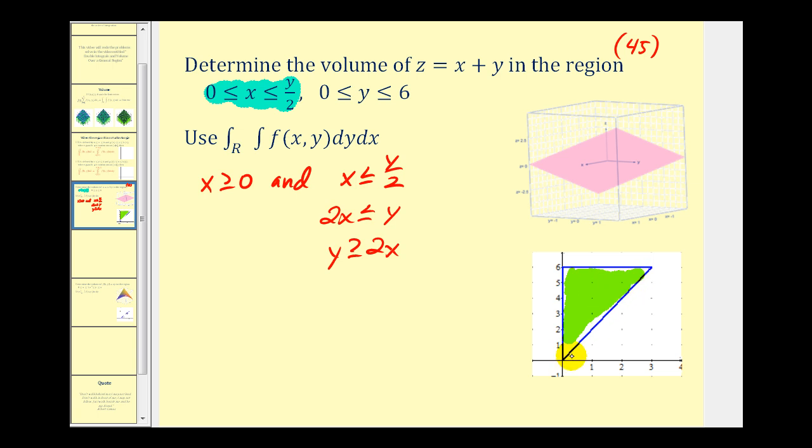So y greater than or equal to 2x would be this blue line here and we would shade above the line because y is greater than or equal to 2x. Since y is on the interval from 0 to 6, this is our region of integration. This line here is key to setting up this double integral correctly.